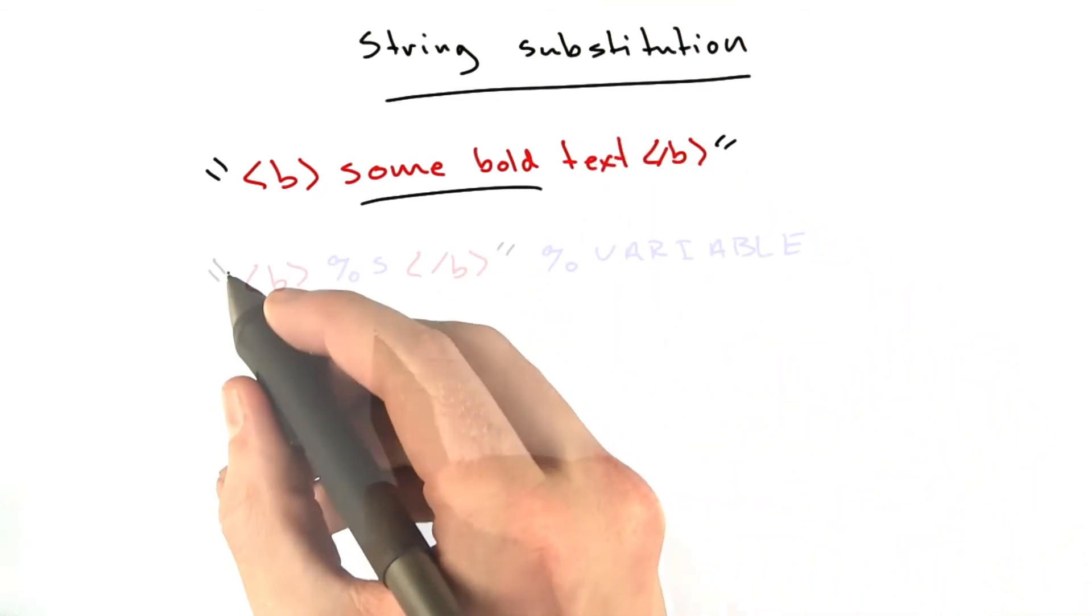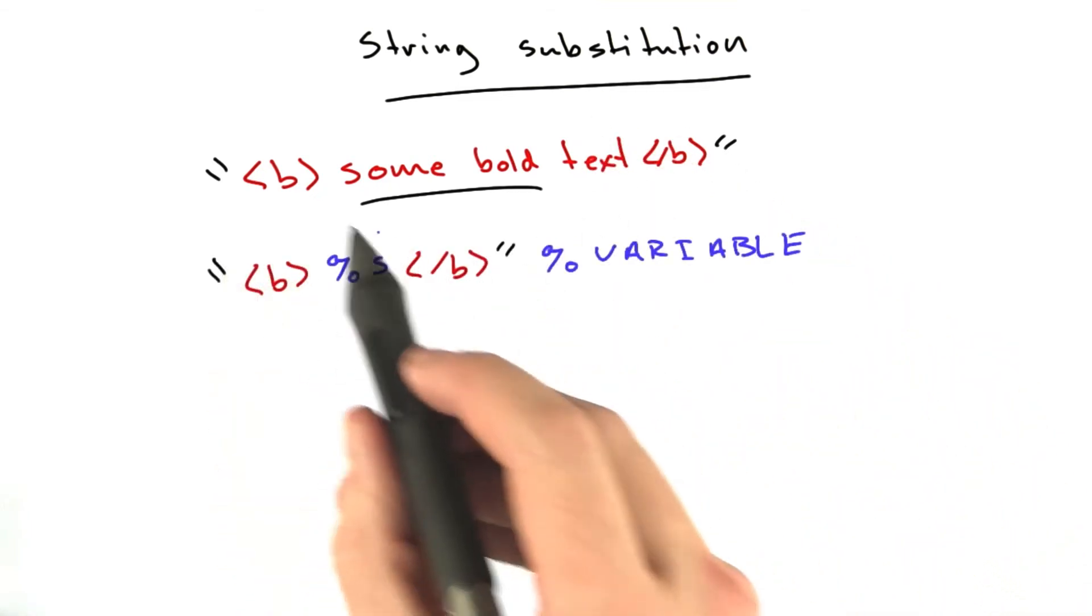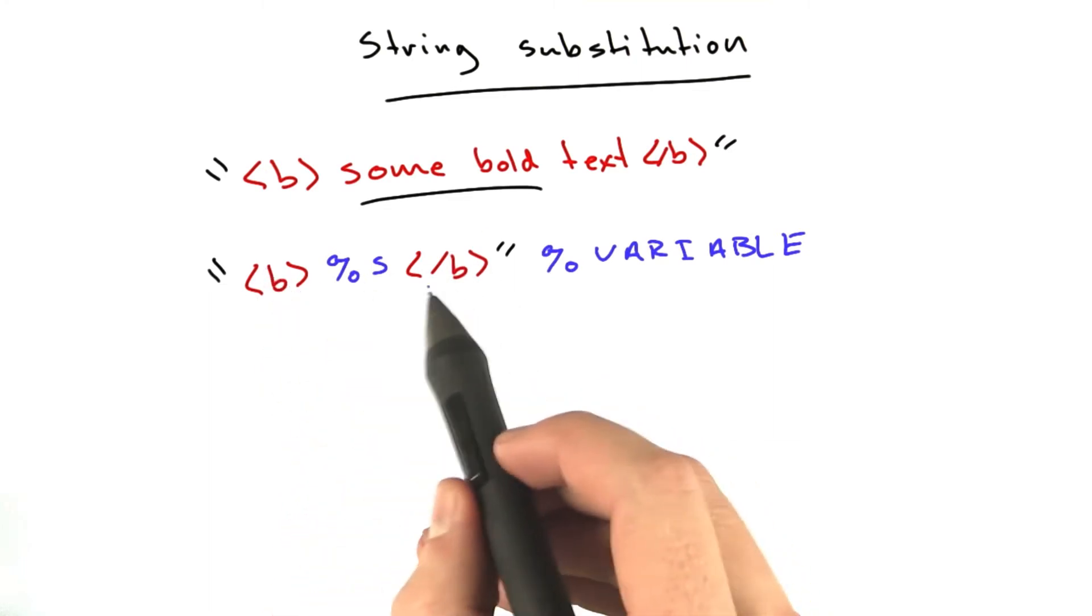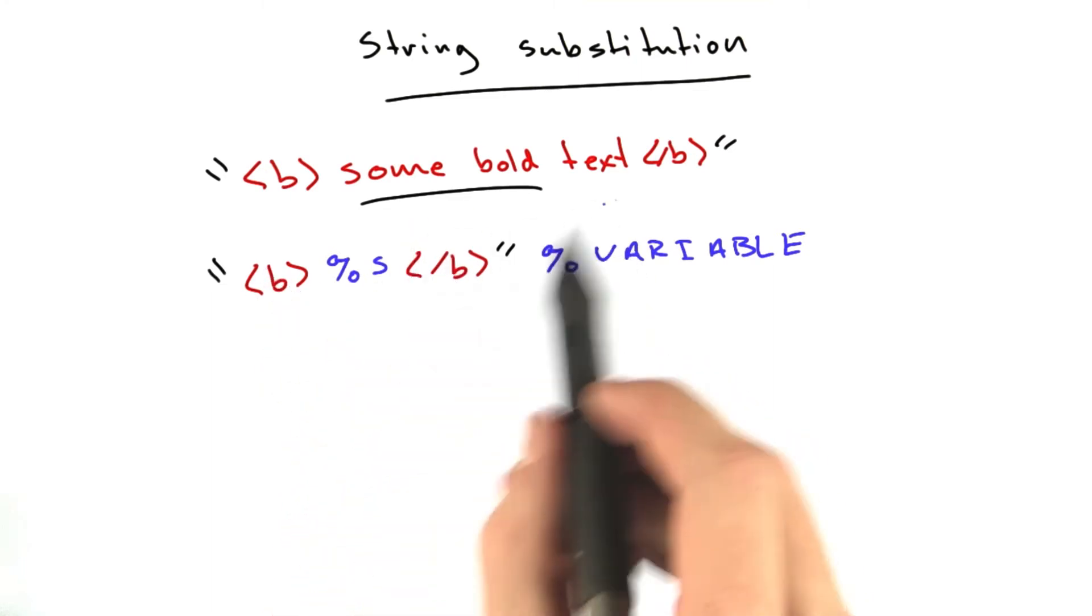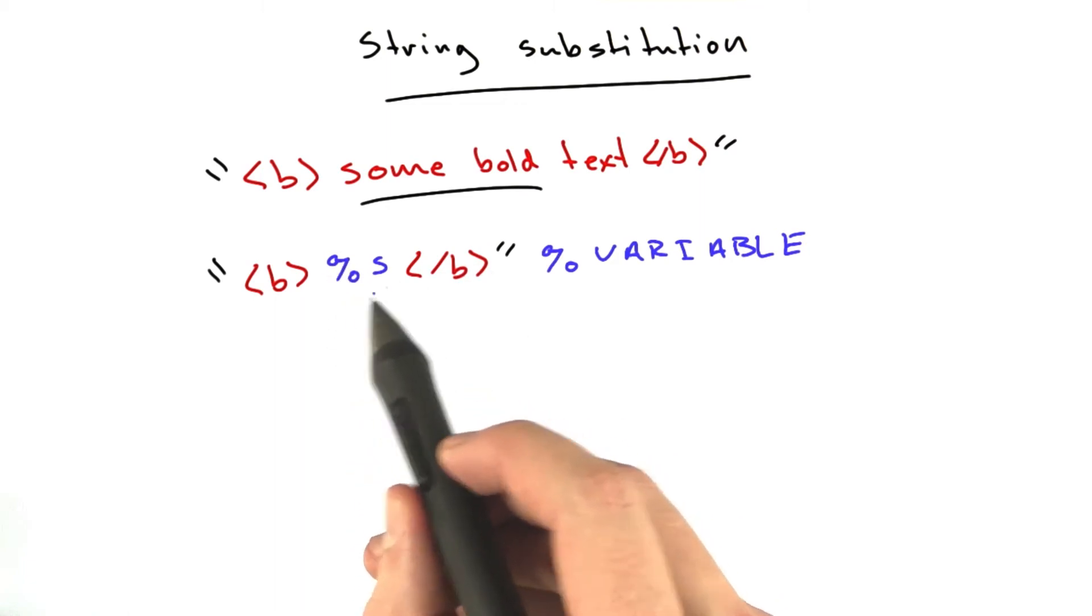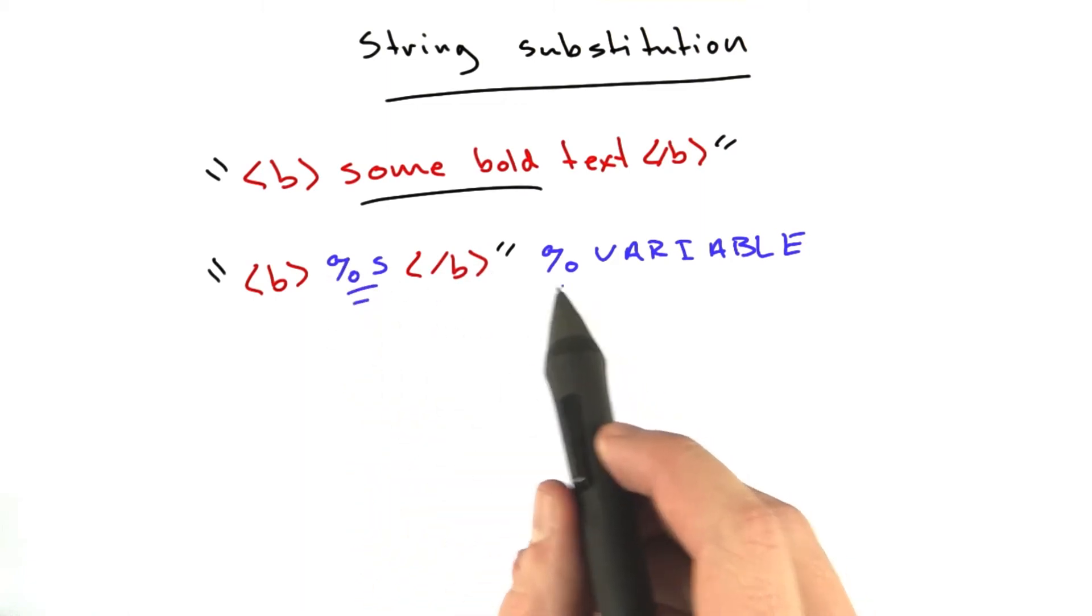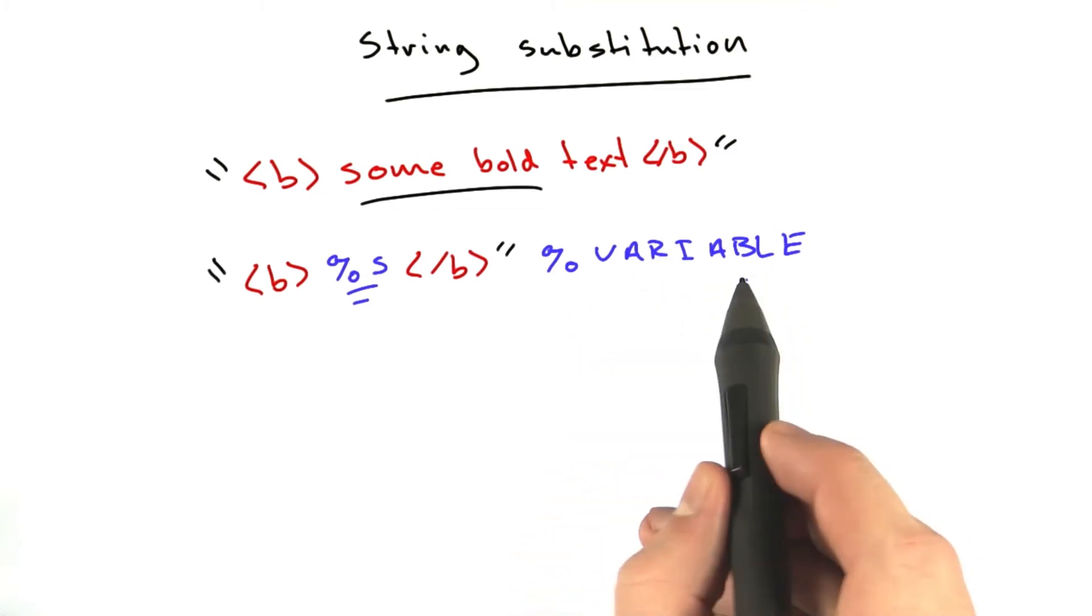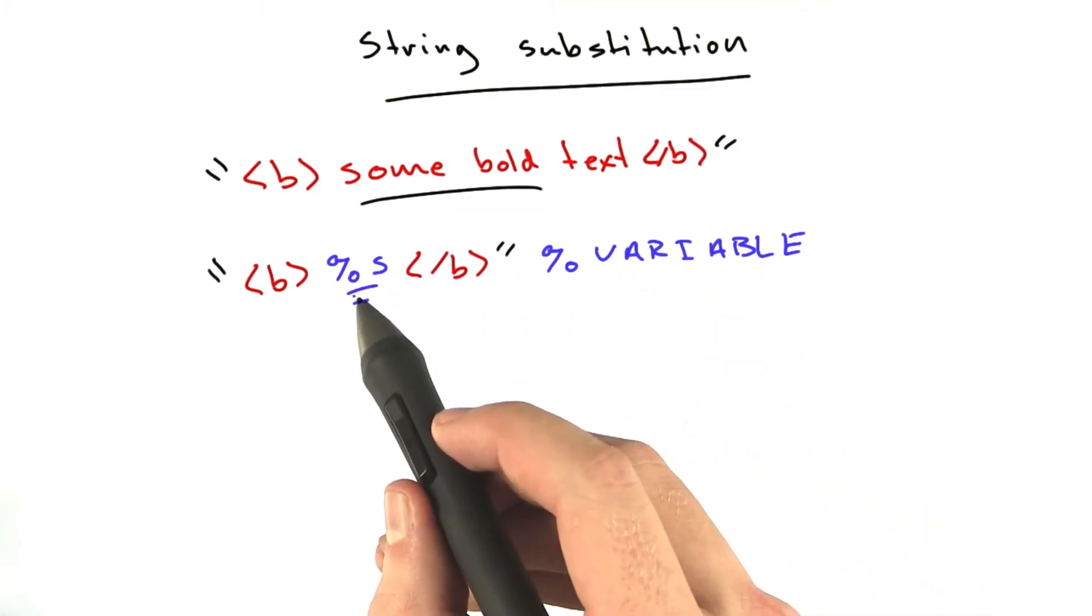Instead, we can do something like this. Here we have the same structure of the string. We've still got our B tags for bold, but I've replaced the contents with this %s. What this does is if we follow the string with a percent sign and then a variable, it will substitute the contents of this variable for %s.